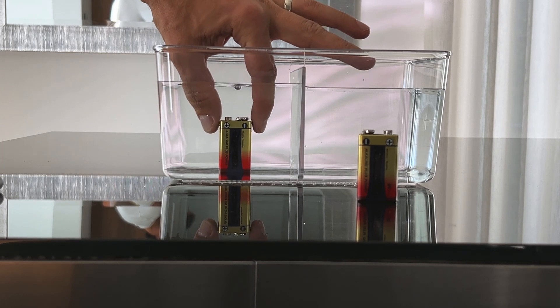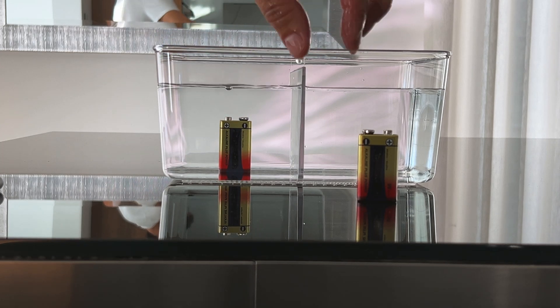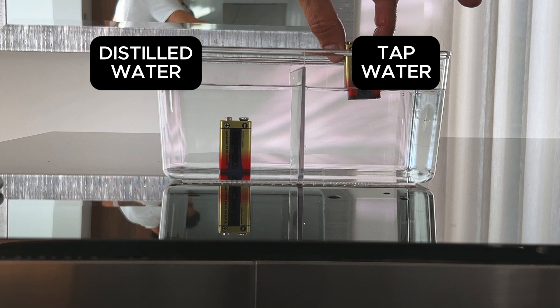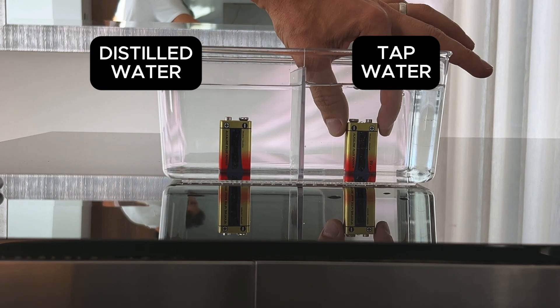In this demonstration, we'll reveal how an advanced hydrogen water bottle such as Oshimita addresses the critical issue of electrolysis contaminants.